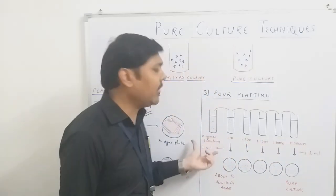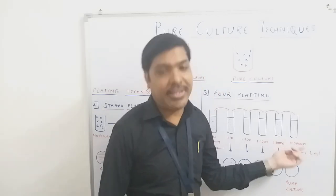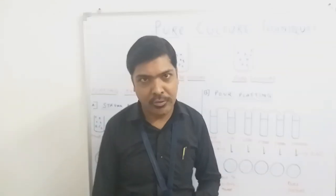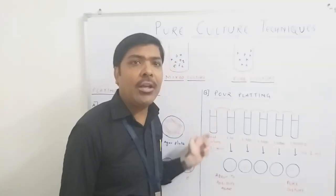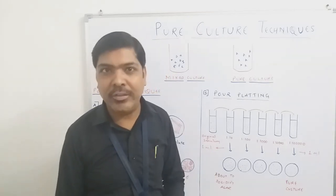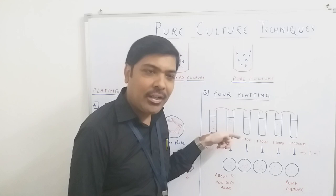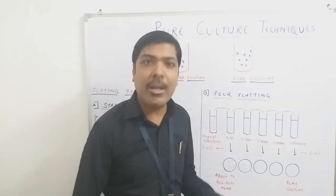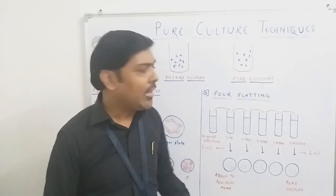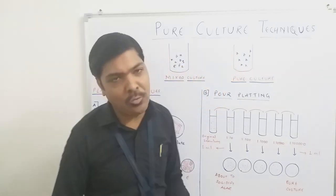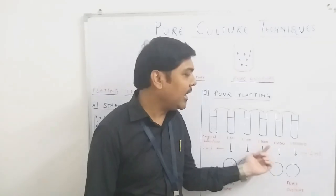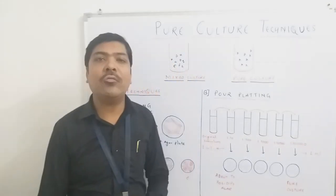In each test tube we put around 9 ml of nutrient broth. From the original inoculum, we take out 1 ml of the mixed culture and put it into the first test tube containing 9 ml of nutrient broth, then mix it. From this first test tube we take 1 ml and put it into the next test tube with 9 ml of broth. By this way we continue diluting each test tube — going from 1:10, then 1:100, 1:1000, 1:10,000 — until the dilution reaches 1 ml.